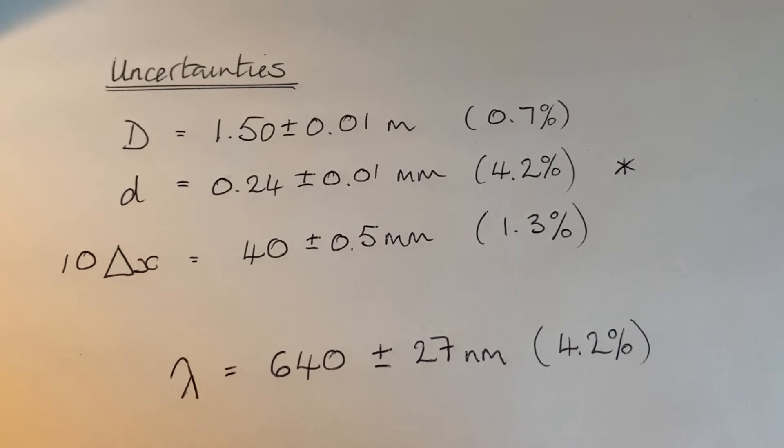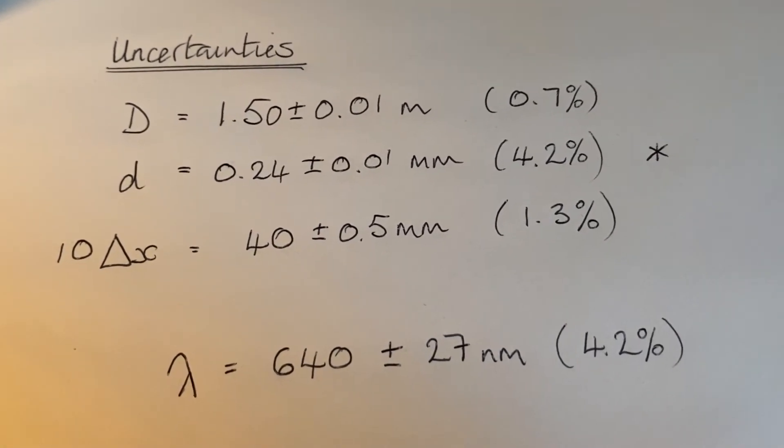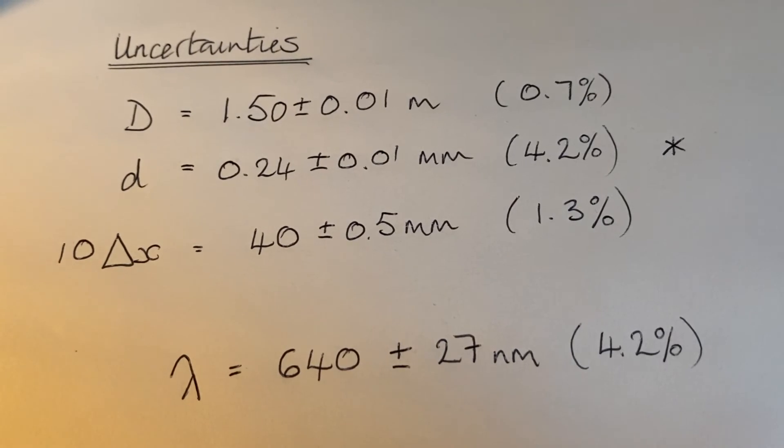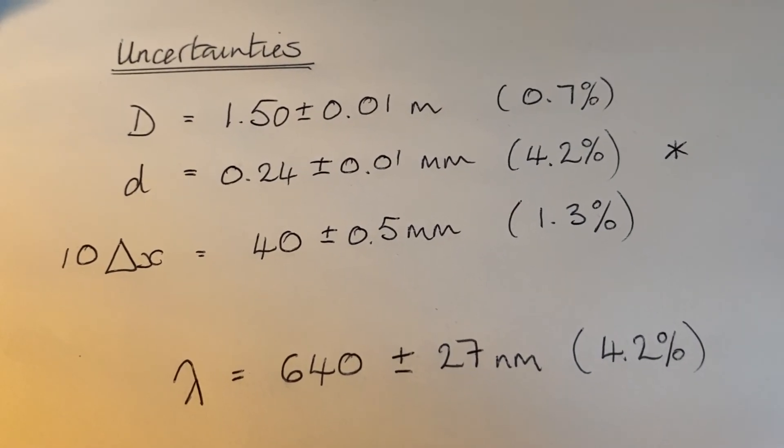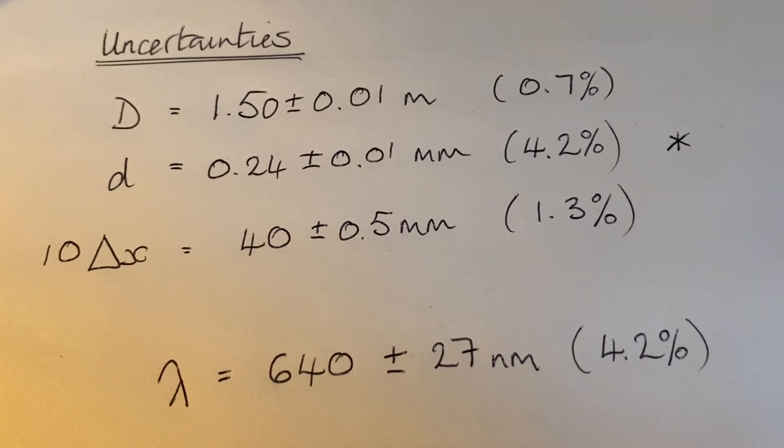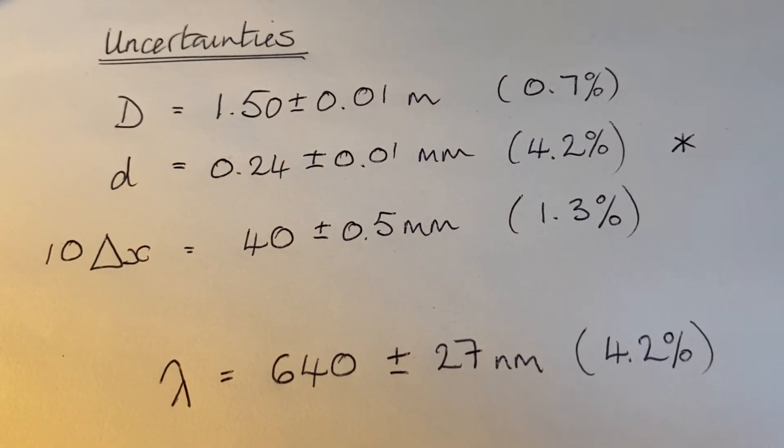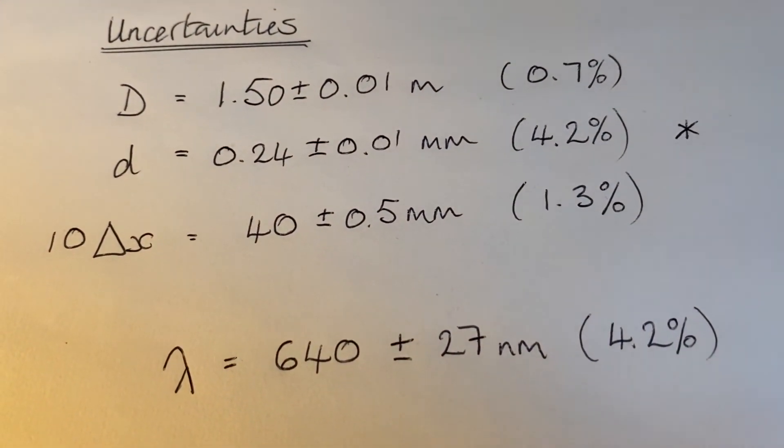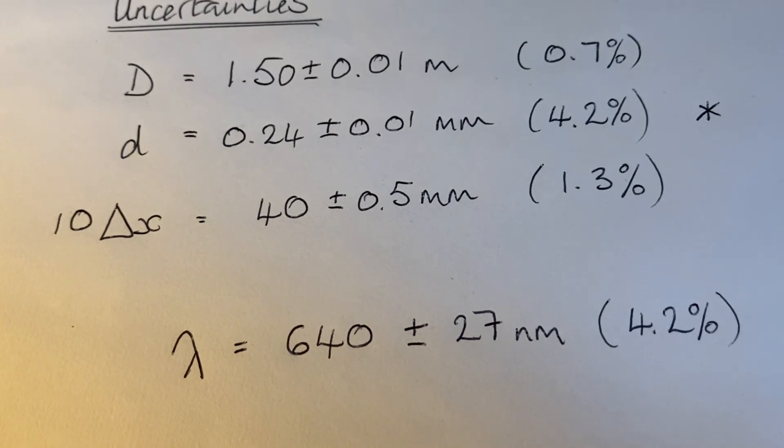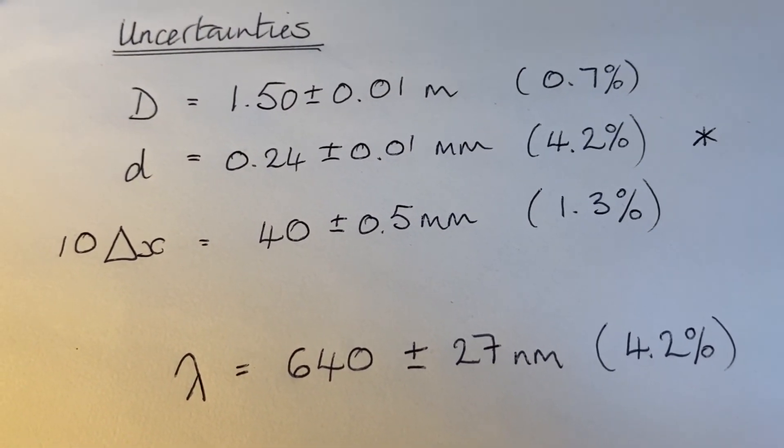Now, on uncertainties: remember, any measurement you make without knowledge of its uncertainty is meaningless. We made three measurements. The distance to the screen was 1.5 meters, measured to within a centimeter, so 1.5 plus or minus 0.01 meters. That's an uncertainty of 0.7%—pretty small because it was a big distance. The slit separation, 0.24 millimeters plus or minus 0.01 millimeters, gives us our largest uncertainty of 4.2%.